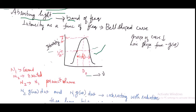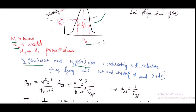Let us consider there are N₁ number of atoms in the ground state and N₂ number of atoms in the excited state. Out of the total N₂ and N₁ atoms per unit volume, N₂·g(ω)dω and N₁·g(ω)dω atoms per unit volume will be capable of interacting with radiation of a frequency lying between ω and ω + dω, or equivalently in the frequency range ν and ν + dν.